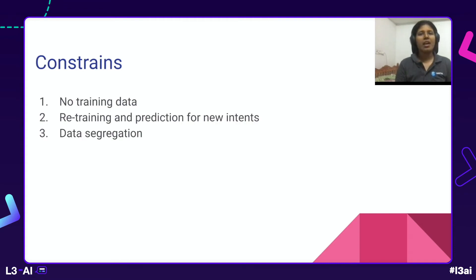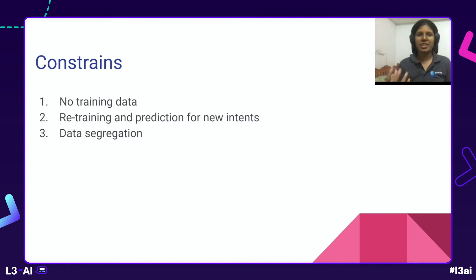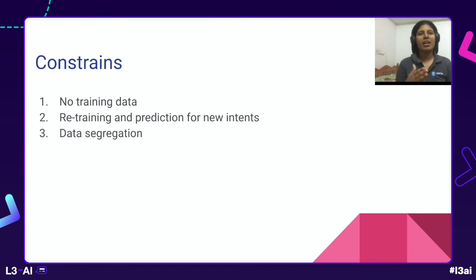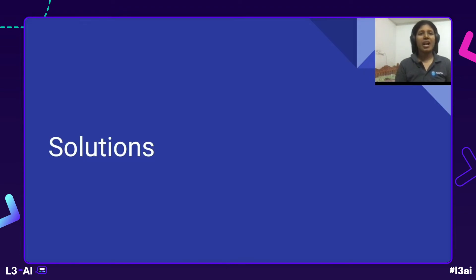Here are a few constraints. First, you can't use any of this data as training data because it's highly confidential. You can't even expose something like a hospital name in your chatbot because it's completely decentralized — no two customers should know about each other's data. Second, retraining and prediction for new customers is very difficult if you think of having separate models. Third, how are we going to achieve the data segregation that we have in a microservices architecture? Here are some solutions we considered — let's walk through them and discuss the pros and cons.